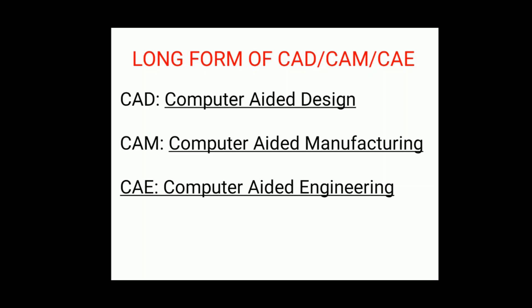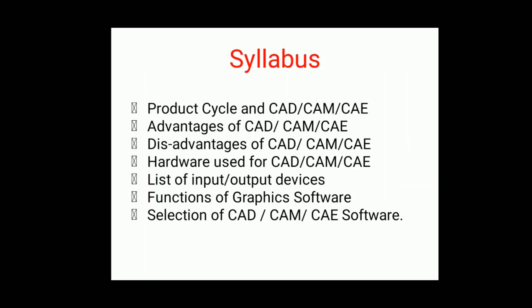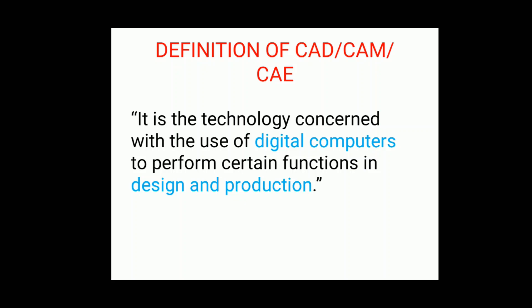This is our first chapter — a short introduction on what CAD, CAM, and CAE are. The syllabus for this first chapter includes: the product cycle and CAD/CAM/CAE advantages and disadvantages, hardware used in CAD/CAM/CAE, list of input and output devices, functions of graphics software, and selection of CAD/CAM/CAE software — how we select different software for different purposes.